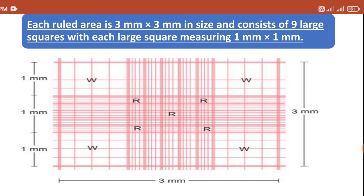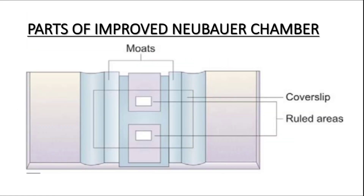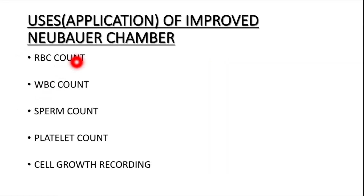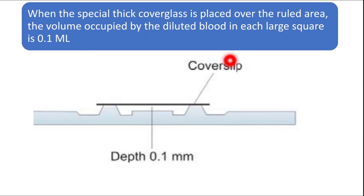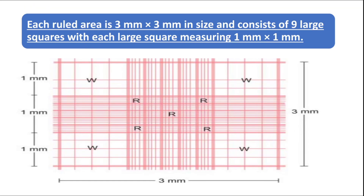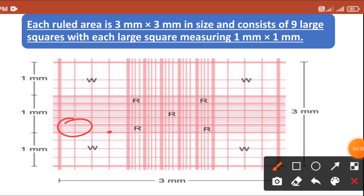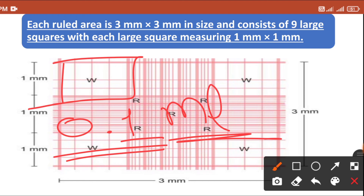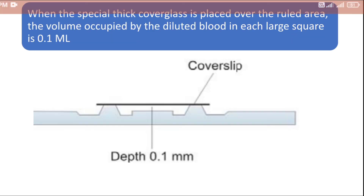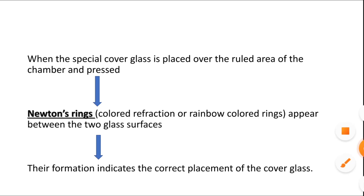For performing white blood cell count, RBC count, sperm count, or platelet count, you need to place a thick cover glass over the ruled area. Whenever the thick cover glass is placed over the ruled area, the volume occupied by diluted blood in each large square is 0.1 milliliters, because each area measures 1 by 1 millimeter.